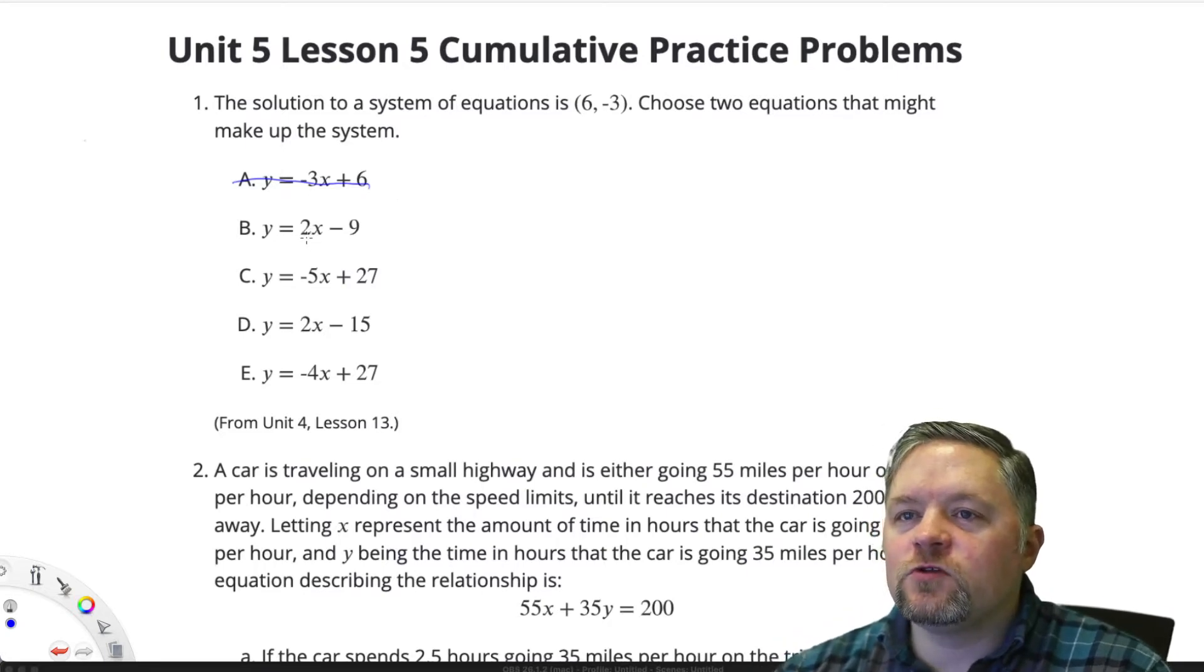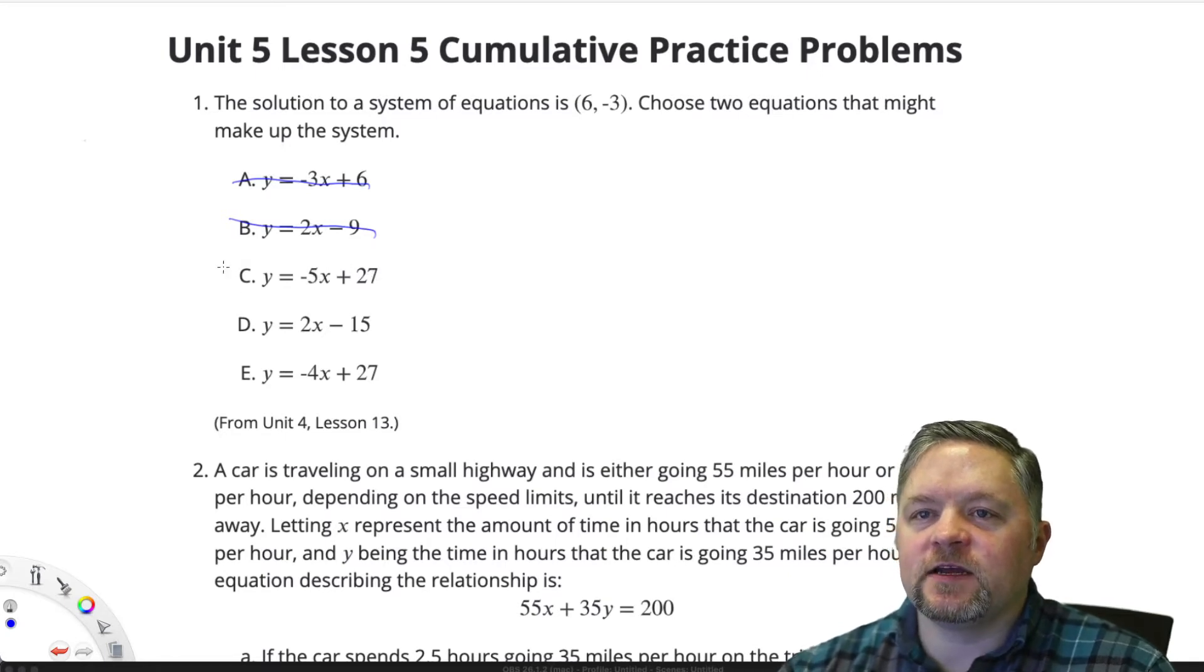2 times 6 is 12, subtract 9, is positive 3. Negative 5 times 6 is negative 30, plus 27 is negative 3. C works.